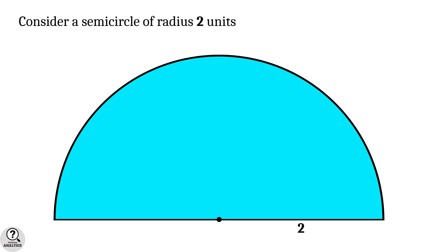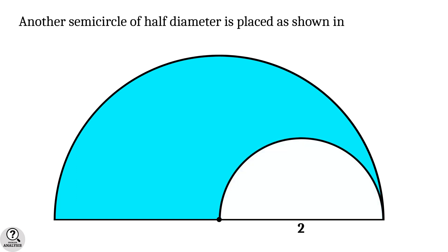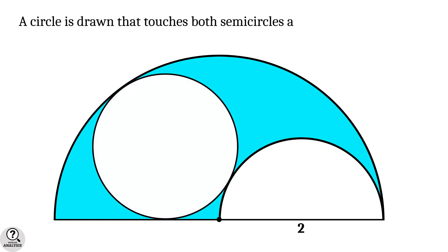Consider a semicircle of radius 2 units. Another semicircle of half diameter is placed as shown in the figure. A circle is drawn inside that touches both the semicircles and also touches the diameter of the larger semicircle. Then my problem is, what is the radius of this circle?